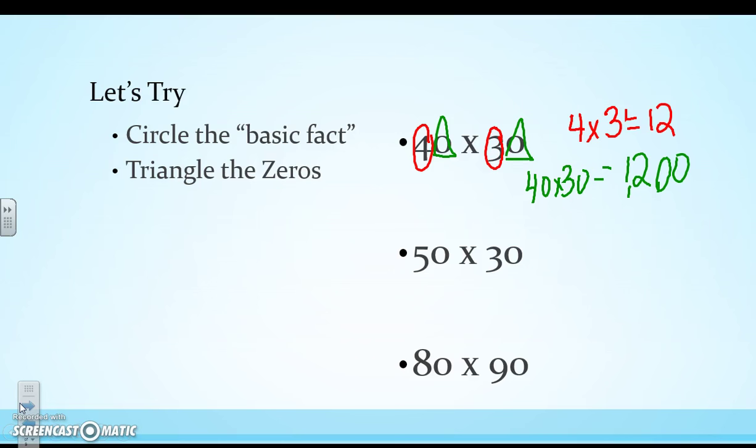Let's try another one. 50 times 30. So the basic fact here, or the digits that aren't 0s, are 5 and 3. So I have 5 times 3. I know 5 times 3 is 15. And I triangle the 0s that are in my two factors. There are two 0s in my factors. So I have 15 and two more 0s that are in my product. So 50 times 30 is equal to 1,500.